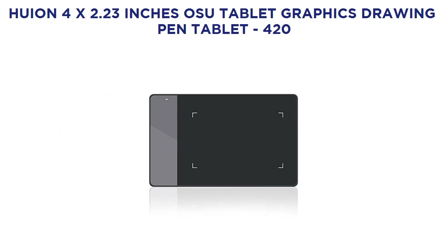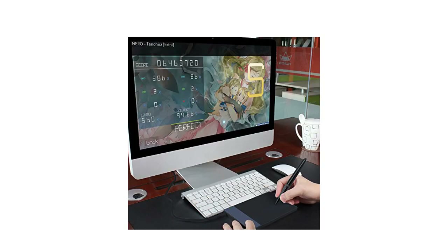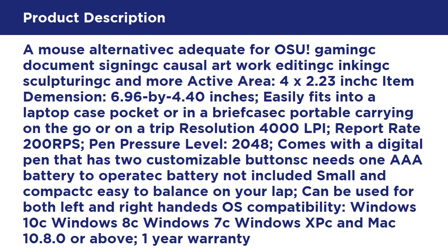Huion 420 2.23-inch OSU tablet graphics drawing pen tablet — a mouse alternative, adequate for OSU gaming, document signing, casual artwork editing, digital ink, sculpting, and more. Active area: 4x2.23 inches; item dimensions: 6.96 by 4.40 inches. Easily fits into a laptop case, pocket, or briefcase — portable for carrying on the go or on a trip. Resolution: 4000 LPI, report rate: 200 RPS.